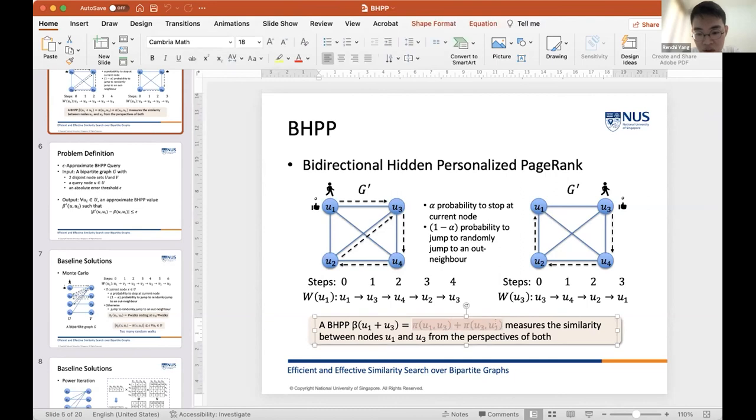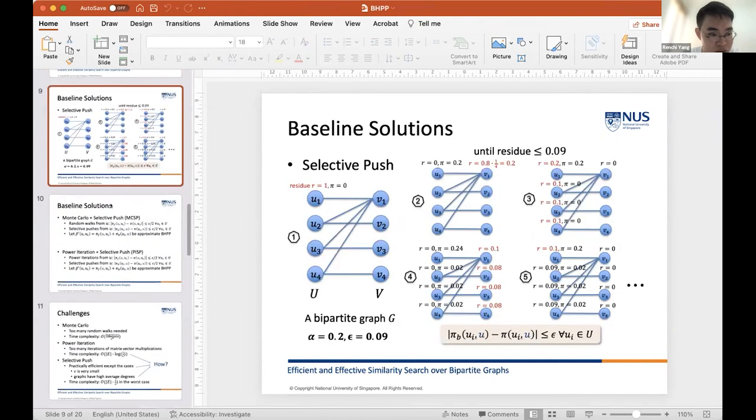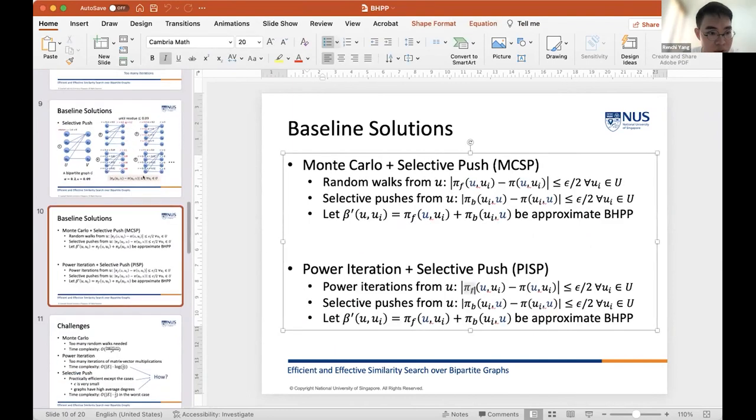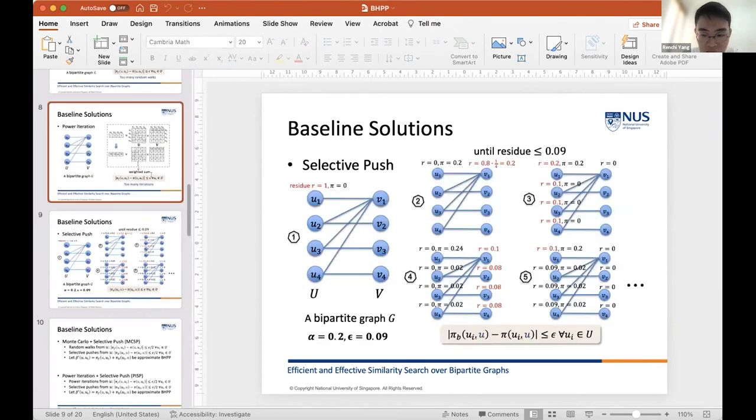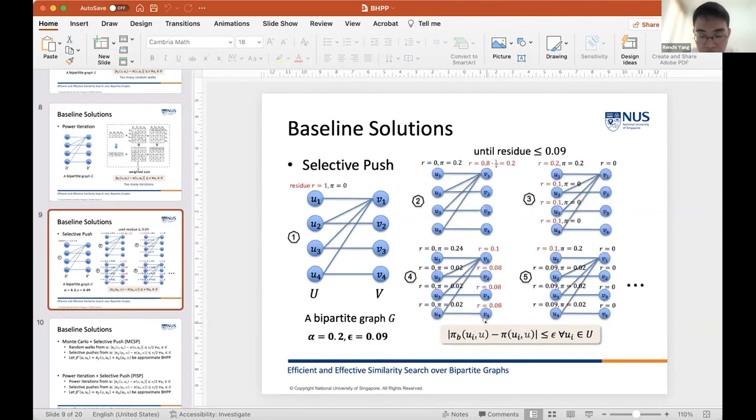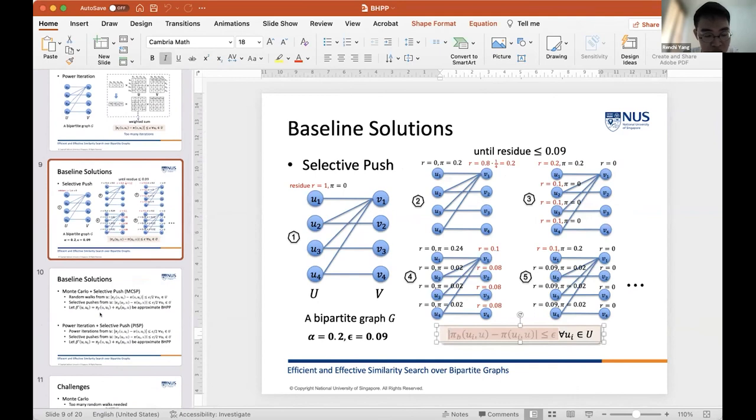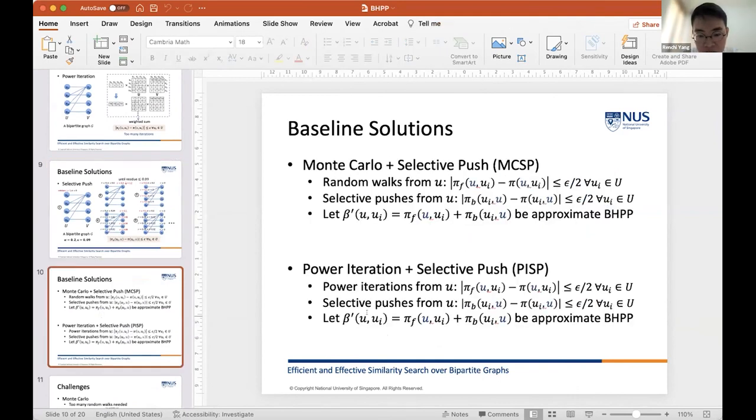For the first one, we can use power iteration to compute it. We can compute the pi(u, ui) for each node. We can find, we can derive, ensure accuracy guarantee. But for the another one, we can use selective push. That is the target node becomes the u and the source node becomes ui. Using the selective push, we can ensure accuracy guarantee. Our measure is the combination of both. So we use these two approaches to compute both and then combine them to compute the BHPP value.